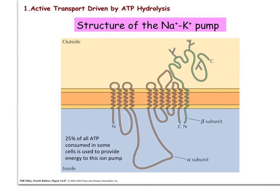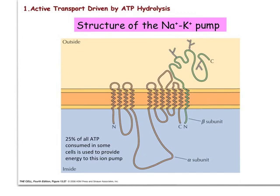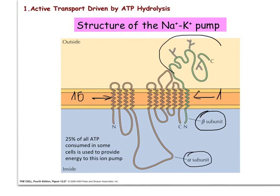The sodium-potassium pump exemplifies the type of active transport driven by ATP hydrolysis. The sodium-potassium pump is made of two main subunits, the alpha subunit and the beta subunit. The alpha subunit contains 10 different transmembrane domains, whereas the beta subunit contains only one transmembrane domain. Furthermore, the beta subunit contains a large extracellular domain which contains three glycosylation sites. The activity of the sodium-potassium pump is absolutely essential for cell physiology, and for many different mammalian cell types, about 25% of all the ATP consumed by the cell is used to provide the energy needed by this pump.